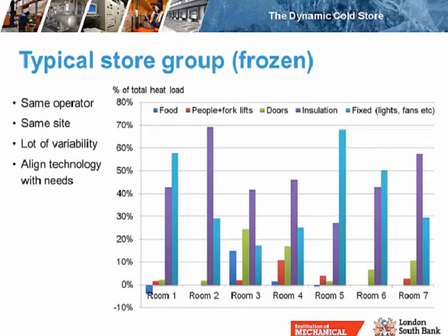I'm showing on the graph here seven different cold rooms — all from the same operator, on the same site — but you can see a lot of variability in the different heat loads: from food, people and forklifts, doors, insulation, and fixed heat loads from lights and fans. In room three, you have a high heat load from doors; infiltration is relatively high in room four. But in rooms one and two it's very low. So technologies that reduce infiltration might be very viable in rooms three and four, but would have little feasibility in rooms one and two.